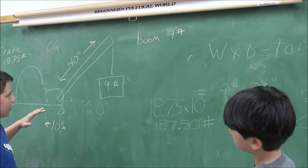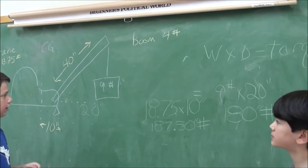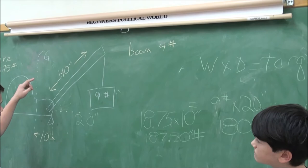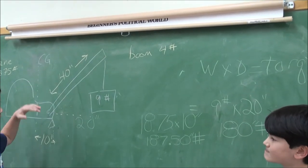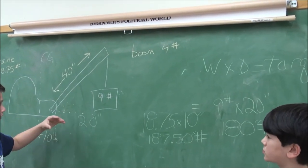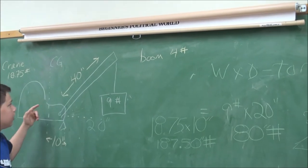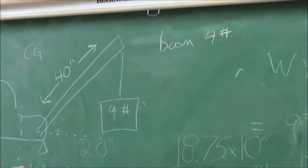We'll take the long side. It's a 60, 30, 90 triangle. The shorter side is always half the distance of the longest side. And half of 40 inches is 20 inches.